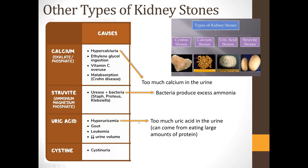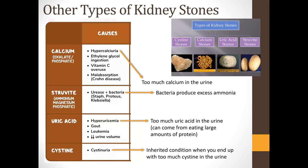There are four major types of kidney stones. Calcium stones are caused by too much calcium in the urine (hypercalciuria). Struvite stones are caused mainly by infection with bacteria that produce excess ammonia, which crystallizes into a stone. Uric acid stones are caused by too much uric acid in the urine, often from eating large amounts of protein — called hyperuricemia. Cysteine stones result from an inherited condition causing too much cysteine in the urine.